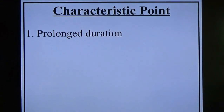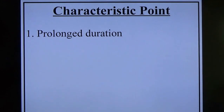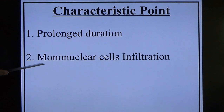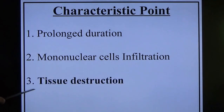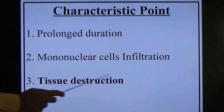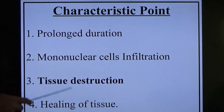The characteristic points of chronic inflammation: one is prolonged duration — more than 48 hours, it may go for a week or a year. That is known as chronic inflammation. Second, which cells come into play are mononuclear cells — macrophages and lymphocytes. Third is tissue destruction. Chronic inflammation comes along with tissue destruction plus healing, all in combination — these are the characteristic points of chronic inflammation.